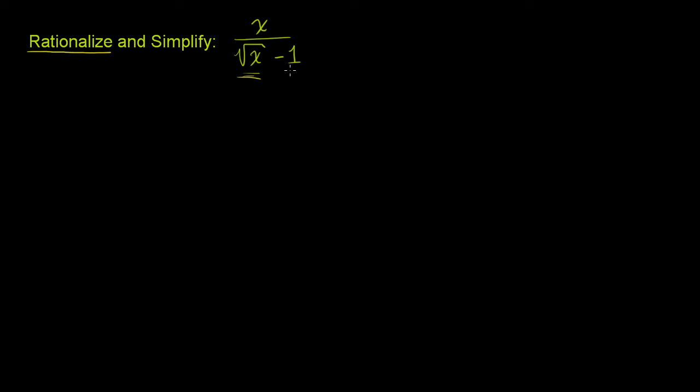So the way to rationalize something like this, where you have a binomial with a radical in it in the denominator, is to multiply by the conjugate of the denominator. So you have square root of x minus 1, and so what you do is you want to multiply the denominator by the square root of x plus 1.